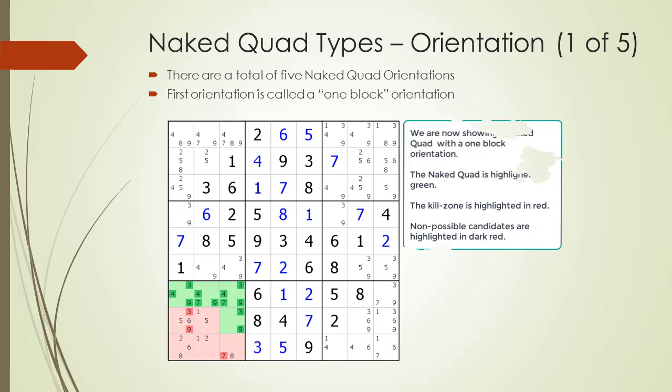The first thing we will consider with the different types of naked quads is orientation. In this video, we will divide naked quad types into 5 different orientations. The first orientation is when all 4 cells occupy a single block as shown.